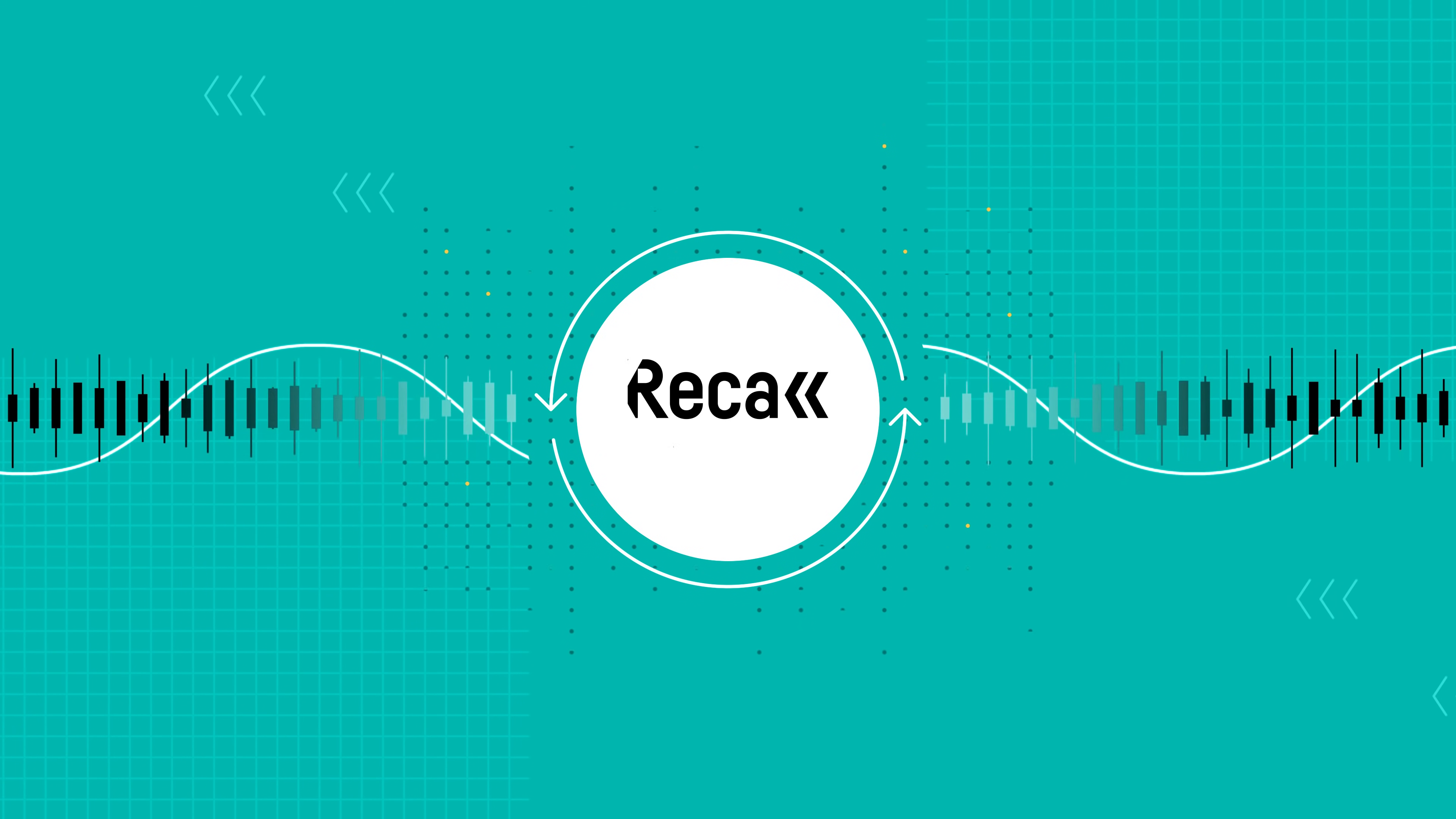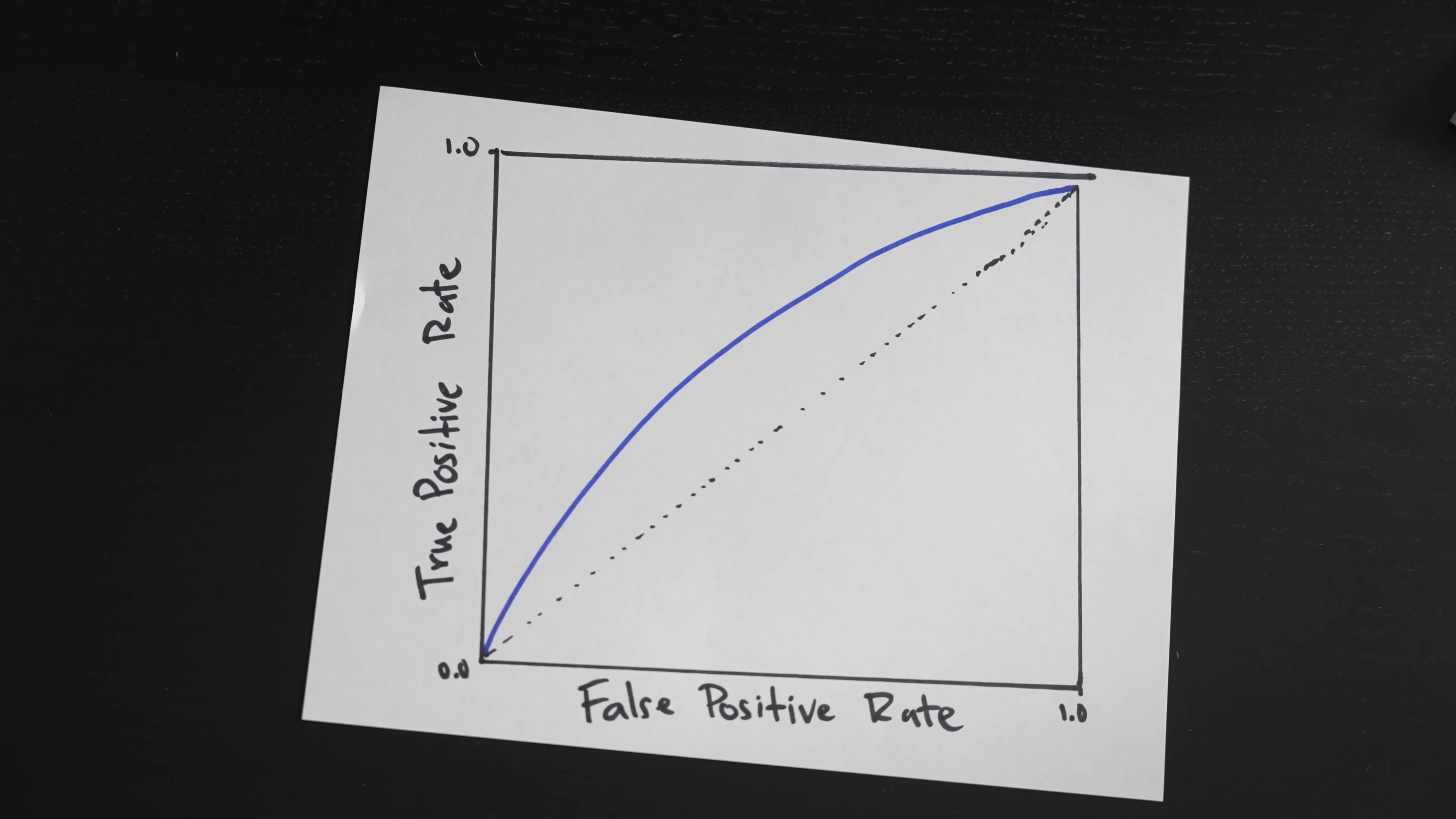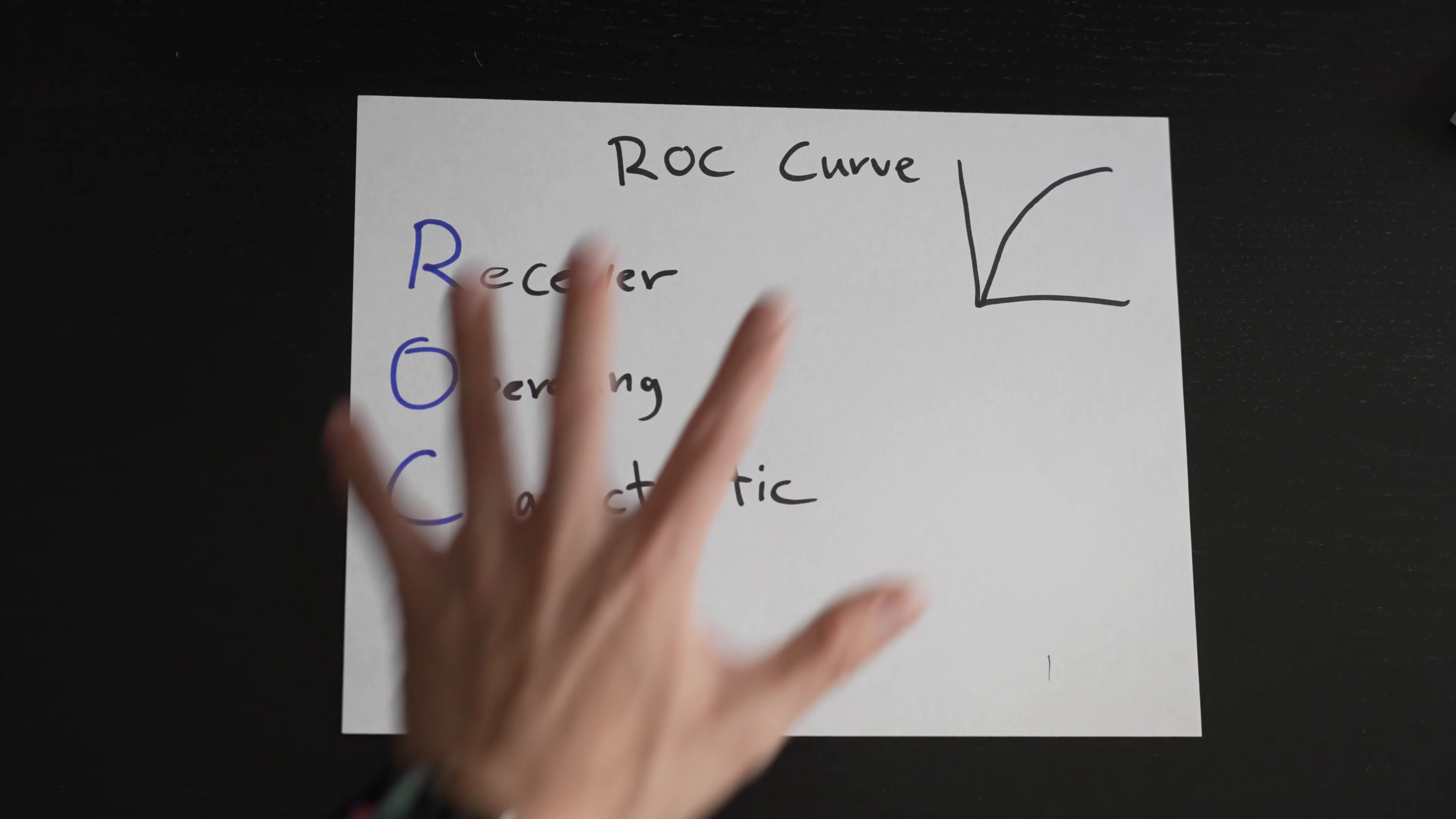This is Recall, a branded channel from Dadaiku, and I'm Joma. Let's look at the graph a bit more closely. This is called the ROC curve, it stands for Receiver Operating Characteristic. I know, it's okay, most people don't actually know what it stands for.